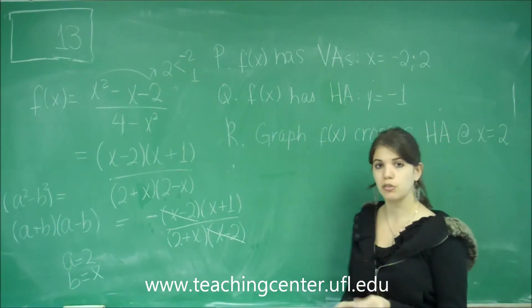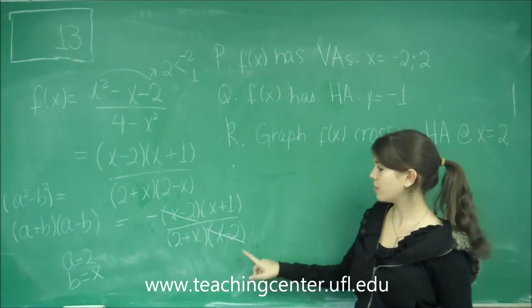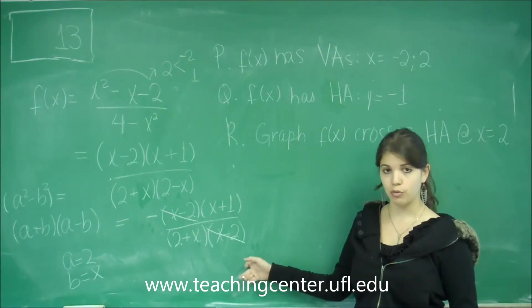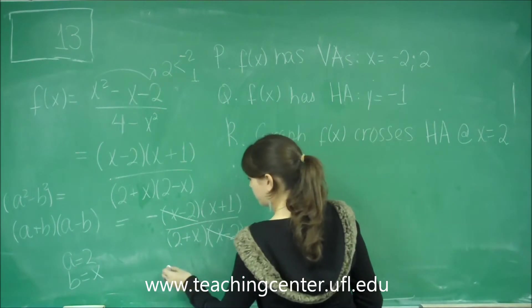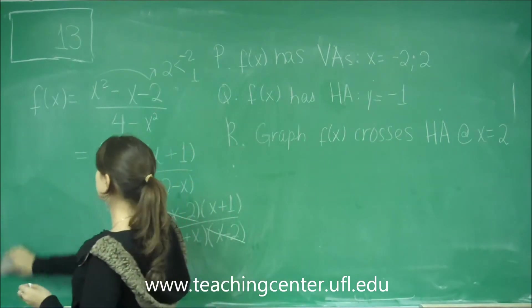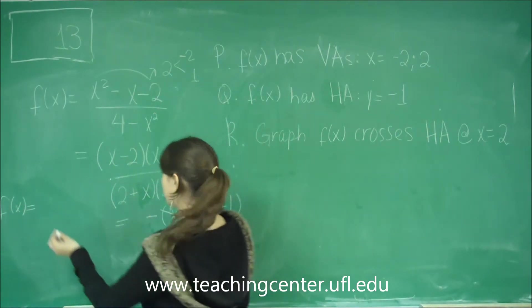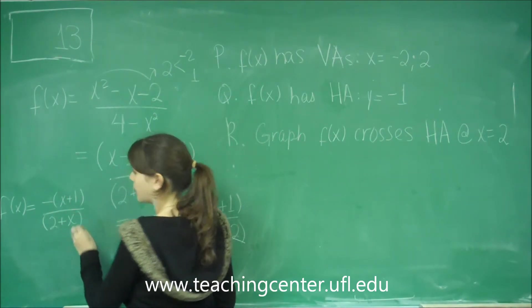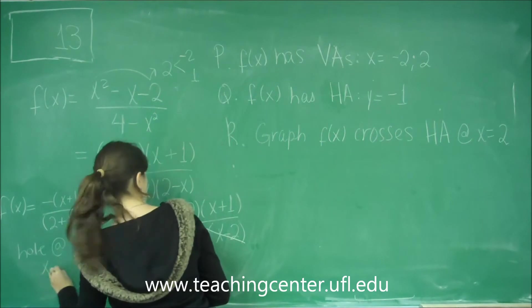But when you cancel those, don't just rewrite it as negative x plus 1 over 2 plus x without noting the significance of this cancellation in the graph. So whenever you cancel something at the top and the bottom for a function that you're trying to graph, that means there's a hole at that point. So let's just go ahead and make a note.